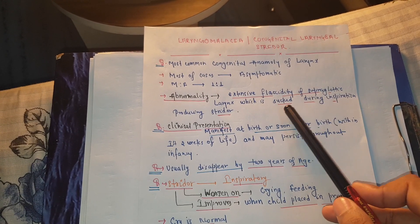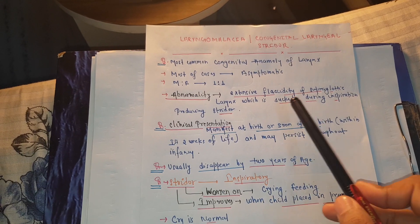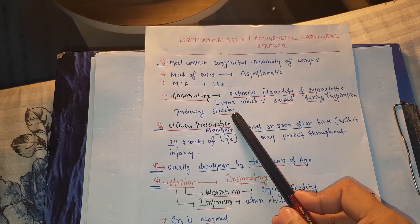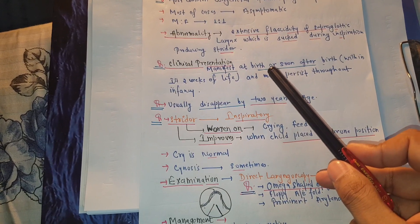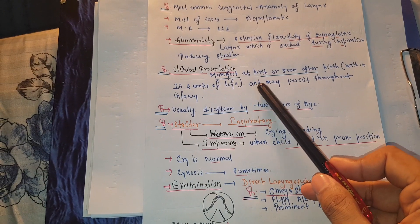The flaccid tissue is sucked during inspiration, producing stridor. The presentation of laryngomalacia manifests at birth or soon after birth.